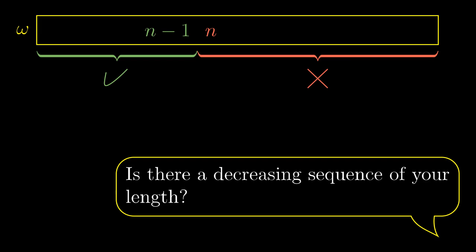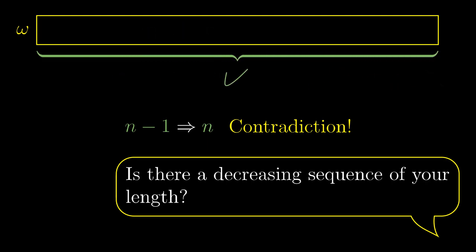That leads us to a contradiction. If the number n-1 answered yes, also the number n must have answered yes. We have already proven this. So we have reached a contradiction after finitely many steps. So the assumption was incorrect and all the numbers must have answered yes. So there is a decreasing sequence of every natural length.